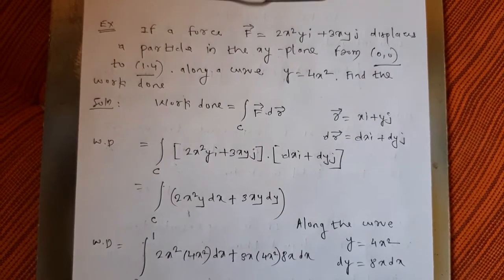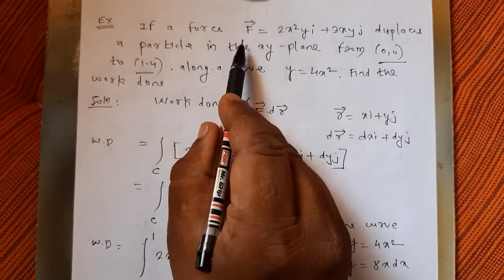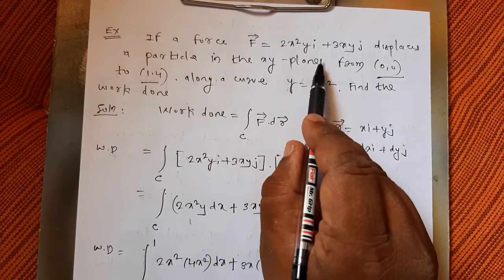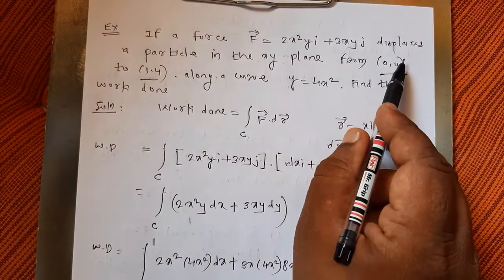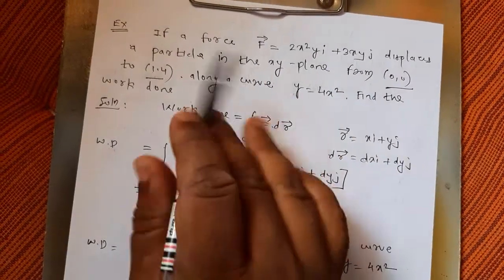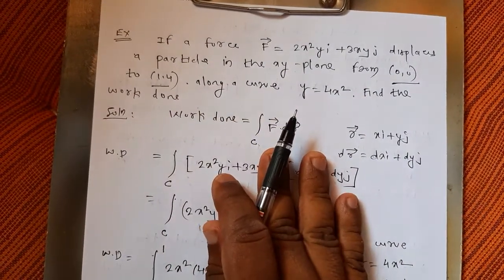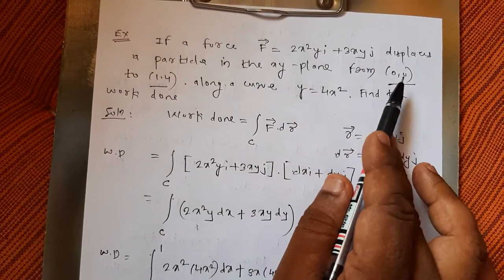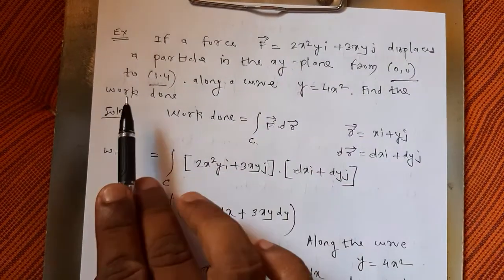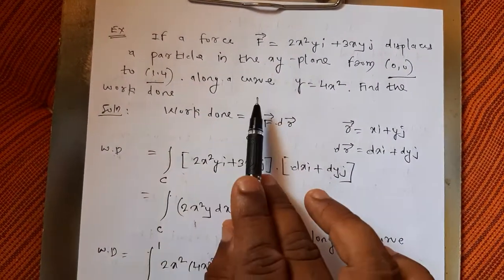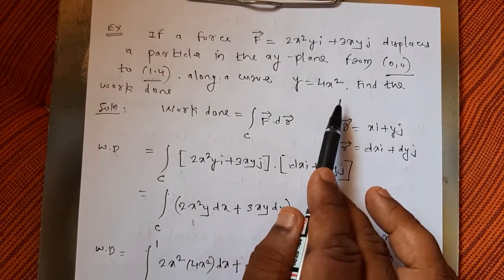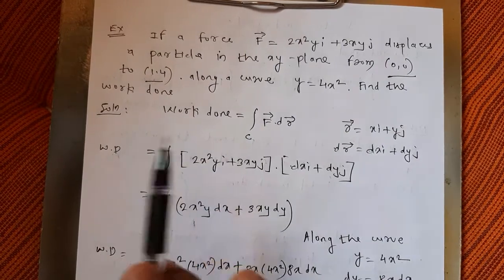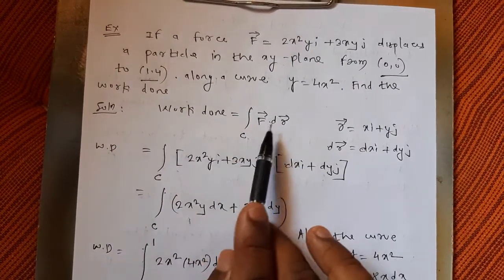The first example: if a force F = 2x²y·i + 3xy·j displaces a particle in the xy-plane from point (0,0) to (1,4) along the curve y = 4x², find the work done.